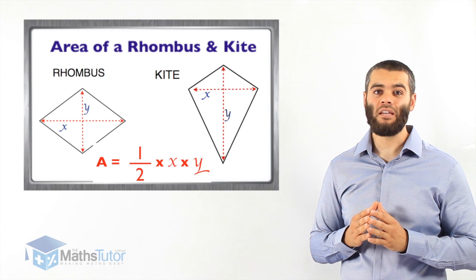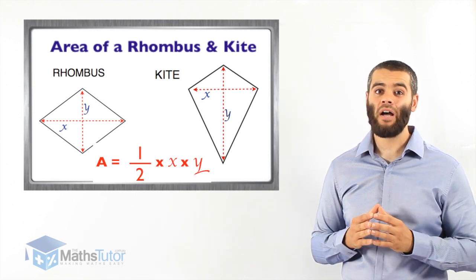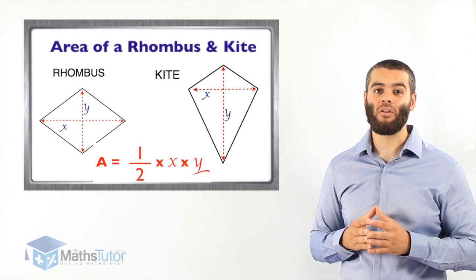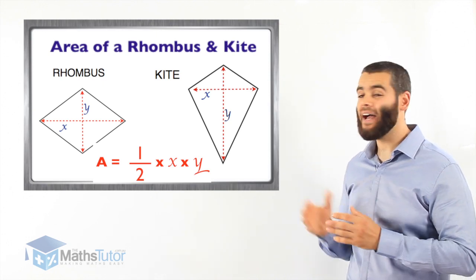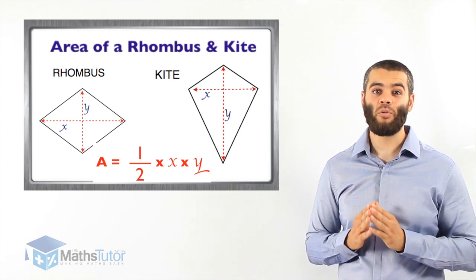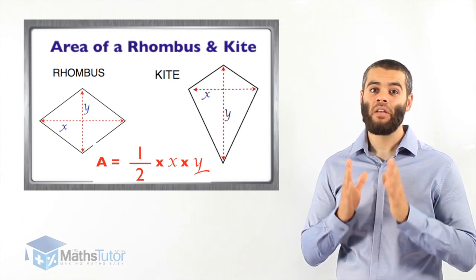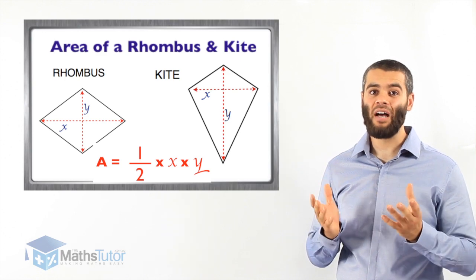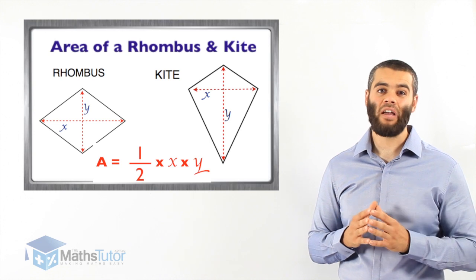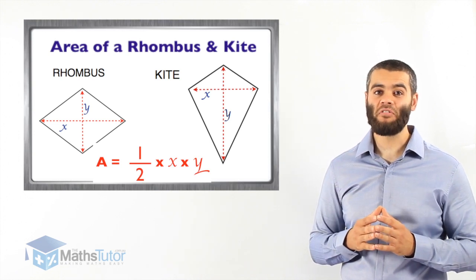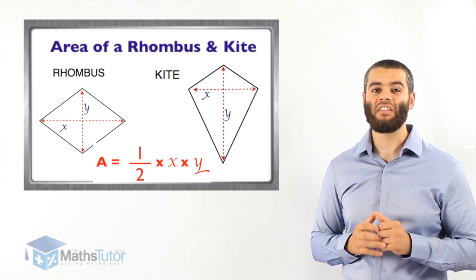The x and y are not any of the sides of a rhombus or a kite — the x and y are actually the diagonals. The diagonals of a rhombus and the diagonals of a kite are the x and y. Very important to remember: the x and y are not measurements of the sides, but the measurements of the diagonals. Now I'm going to show you some examples of how we work out the area of a rhombus and the area of a kite.